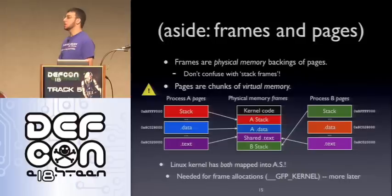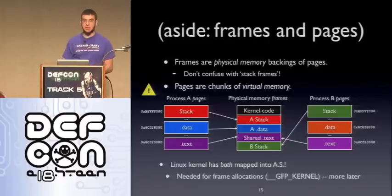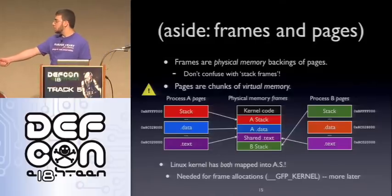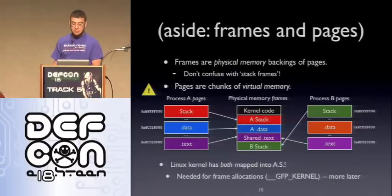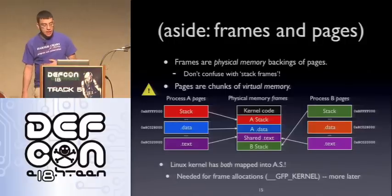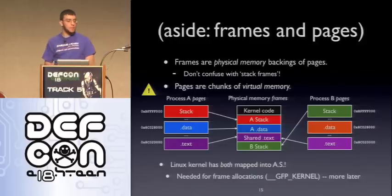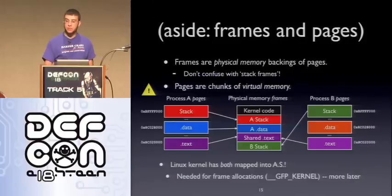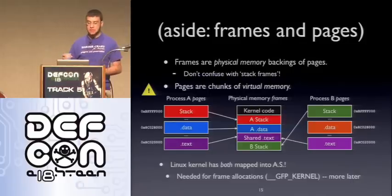Process B is the same process — it's just the same program — which means it can share the same text frame, and it's read-only so that's okay. Process B hasn't been run in a while, and data has gotten swapped out to disk. Process B's stack is still in memory. What's important is that the Linux kernel has both physical frames and a whole bunch of physical memory mapped into the address space.